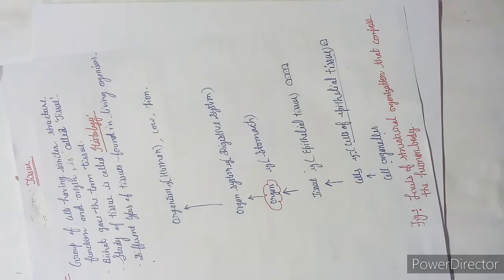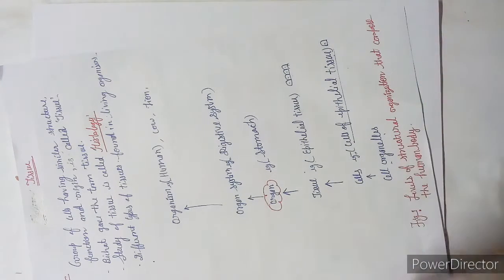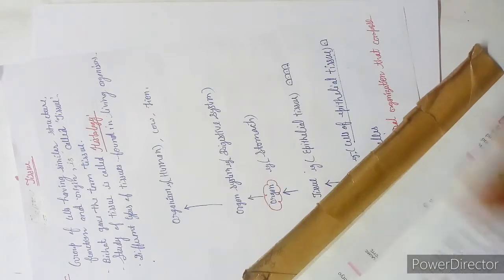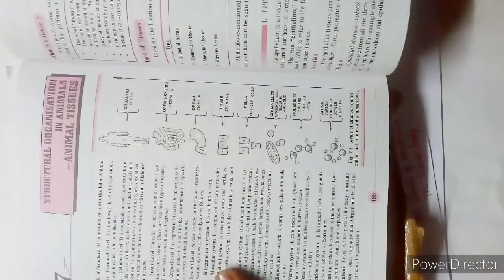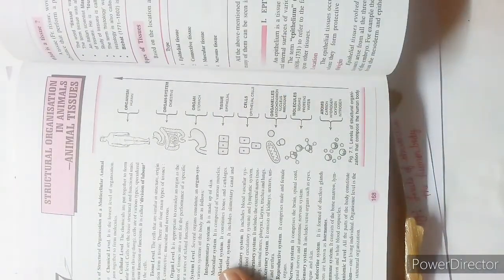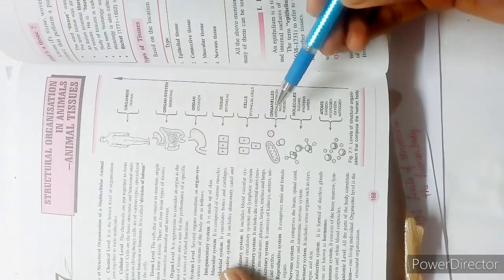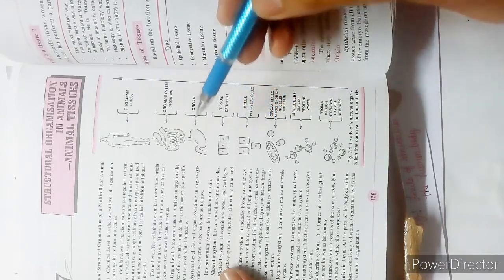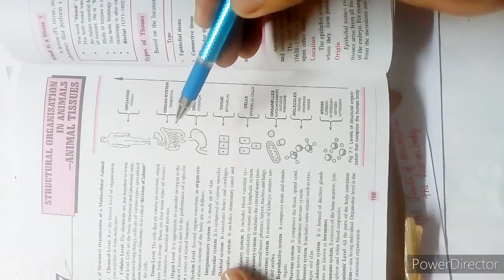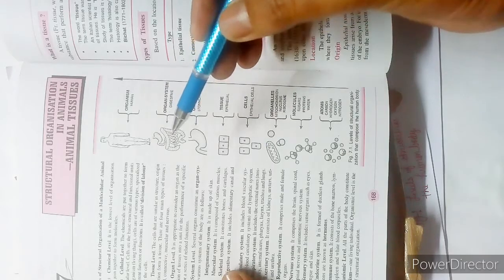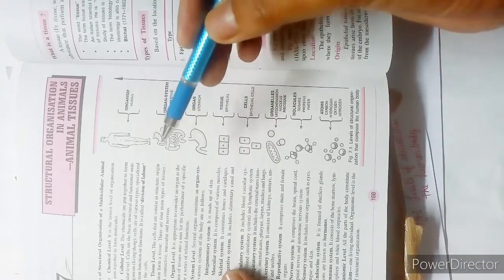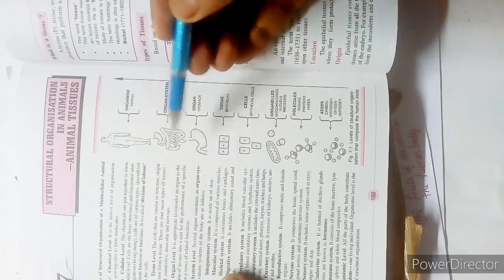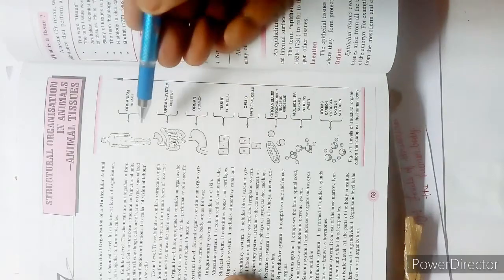This diagram shows the full hierarchy: organelles such as mitochondria, nucleus, and ribosomes form cells, then tissue, then organs, then organ systems. For example, the digestive system contains the stomach, small intestine, large intestine, liver, and pancreas. Many systems come together to form the organism.